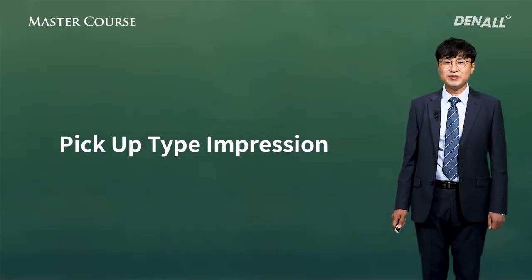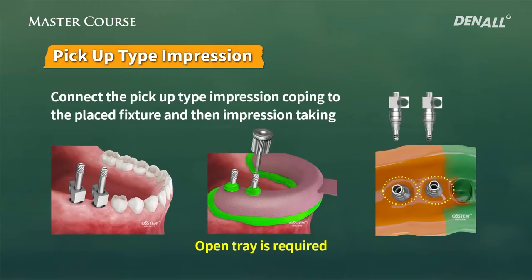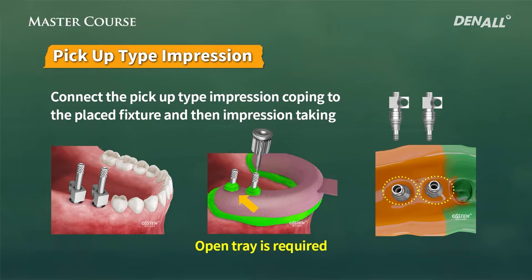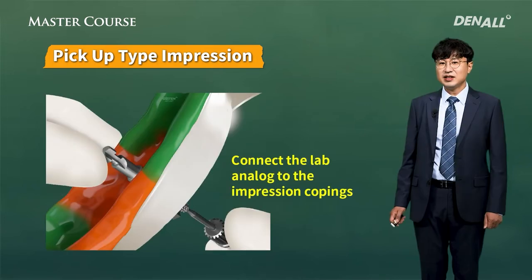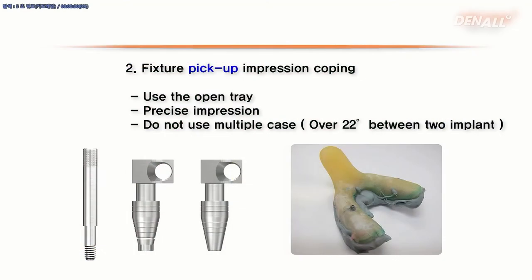Of the fixture-level impression, pick-up type impression is the one most commonly used. The red arrow indicates the pick-up impression coping. You might not know much if you see it for the first time, but if you use it many times in your clinic, you would become familiar with it. You have to use an open tray, link the pick-up impression coping, take the impression, unscrew it, and take the impression out. Then the pick-up impression coping will come with the impression. And you have the lab analog, which copies the form of the fixture. Through the video, you will gain more understanding.